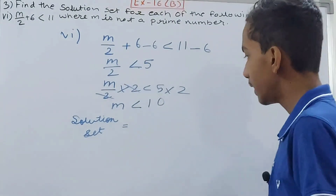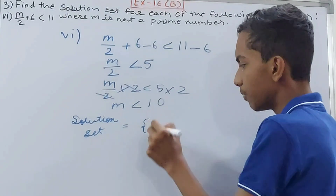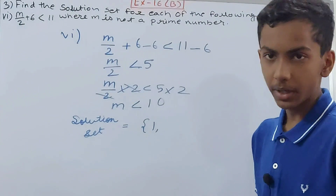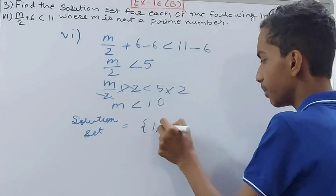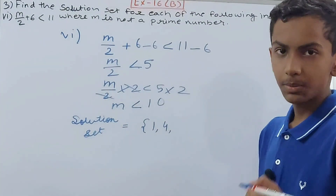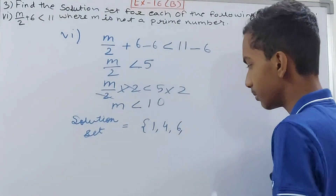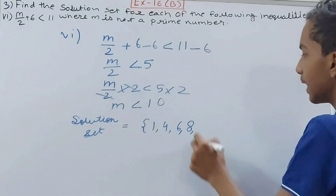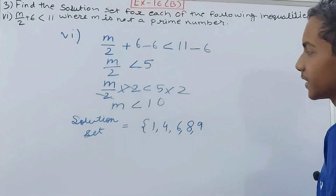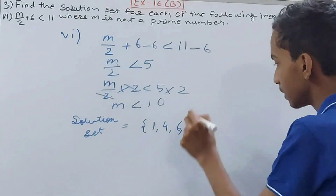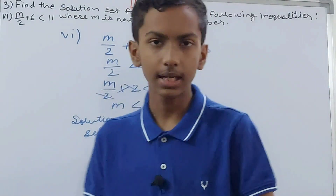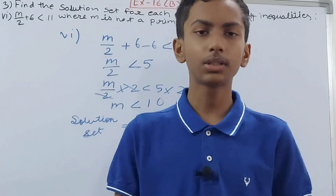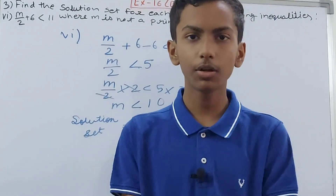The condition is that m is not a prime number, and m is less than 10. Starting from 1: 1 is neither prime nor composite — include it. 2 is prime — skip. 3 is prime — skip. 4 is not prime — include. 5 is prime — skip. 6 is not prime — include. 7 is prime — skip. 8 is not prime — include. 9 is not prime — include. So the solution set is {1, 4, 6, 8, 9}. That's all for today — subscribe and leave a like. Take care, bye!